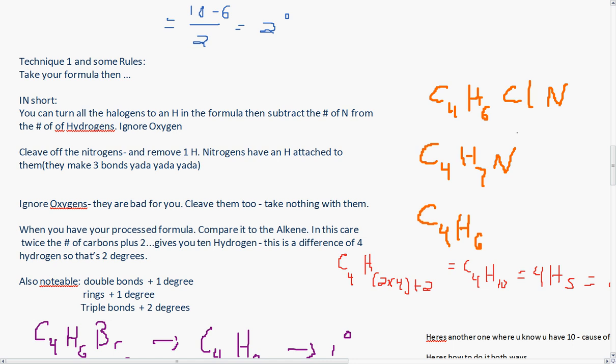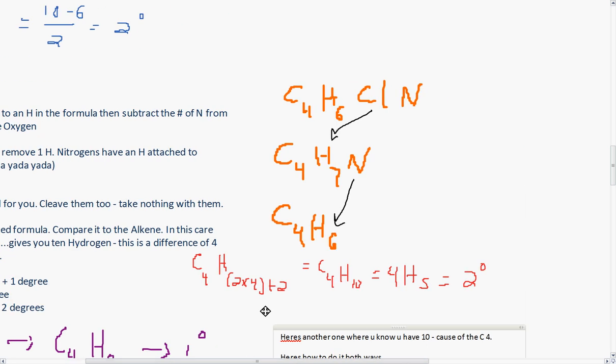So here you see this chlorine turned into a hydrogen, and then this nitrogen left and took its buddy with it. So when you have your processed formula, you compare it to the alkene. In this case, twice the number of carbons plus 2 gives you 10 hydrogen, and this is a difference of 4. So that's 2 degrees. You can see how I did the math here in red.